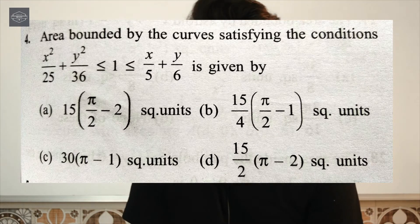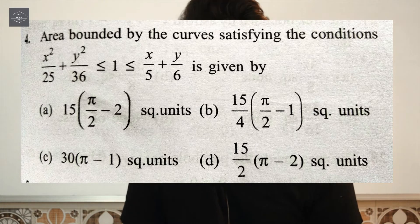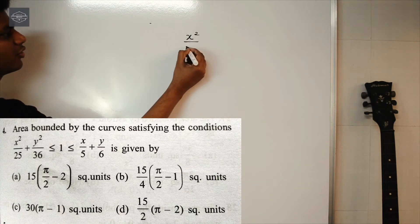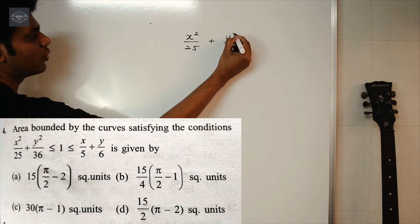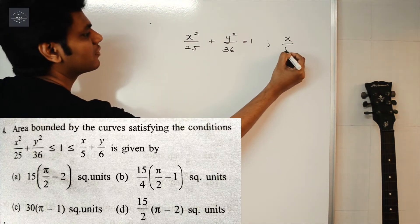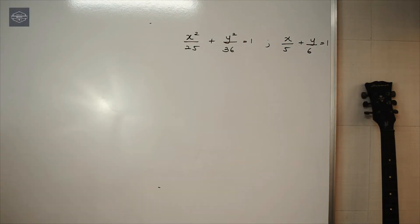The next question is: area bounded by the curves satisfying x²/25 + y²/36 ≤ 1 ≤ x/5 + y/6. So here we have to find the area between an ellipse and a straight line. The equations are x²/25 + y²/36 = 1 and x/5 + y/6 = 1.